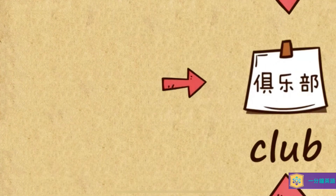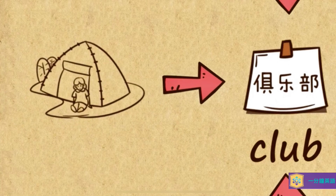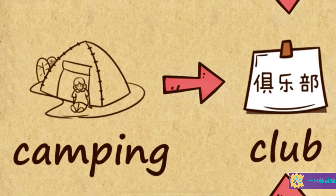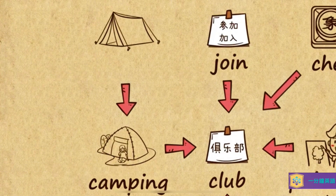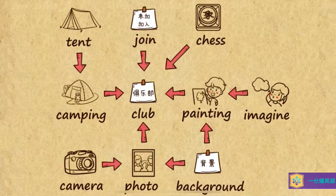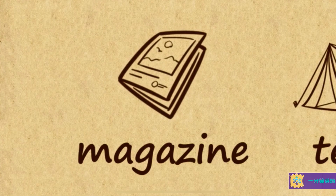说不定你对这些艺术类的东西不感兴趣，你比较喜欢大自然，你喜欢野营，那野营我们叫camping. 如果你想要野营，你需要的设备就是一个帐篷，那帐篷我们叫tent. 我们可以join各种各样的club：chess club、painting club、photo club、camping club. 说不定我们有一些兴趣爱好是跟club无关的，可能我们就喜欢读东西或写作。当然我们有杂志，这个英文叫magazine.